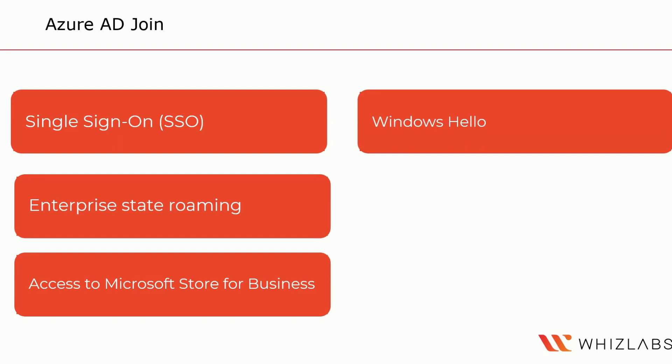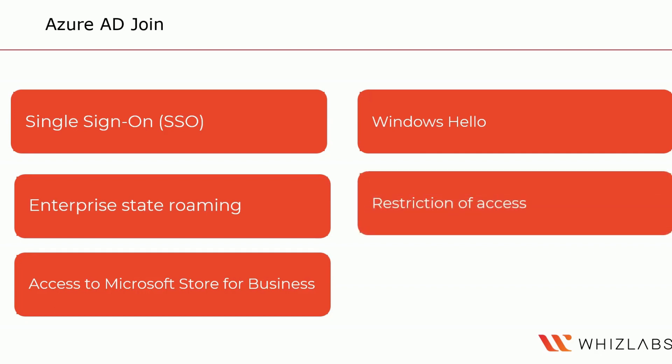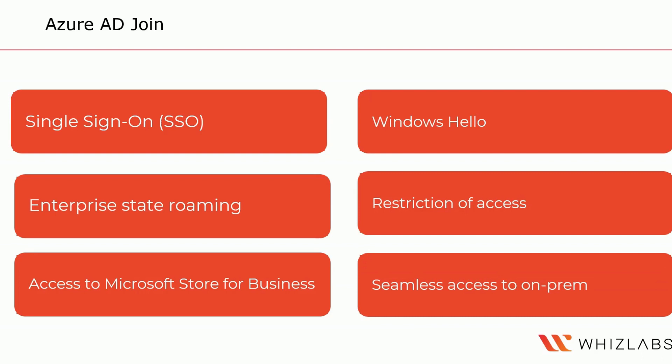Windows Hello provides users with secure and convenient access to work resources from joined devices. There is also restriction of access, so you can restrict access to particular apps for only joined devices that meet your compliance needs. Finally, joined devices also have seamless access to on-premises resources.